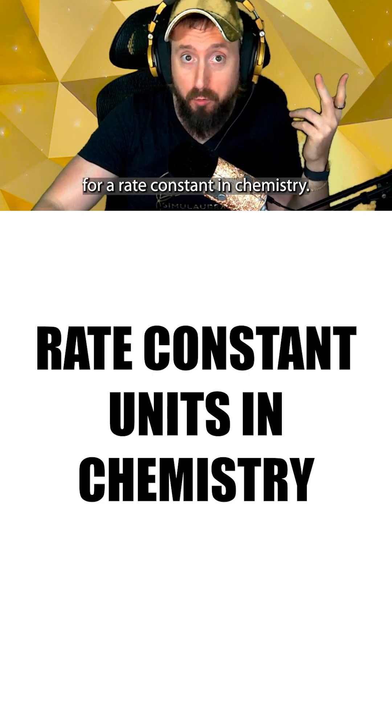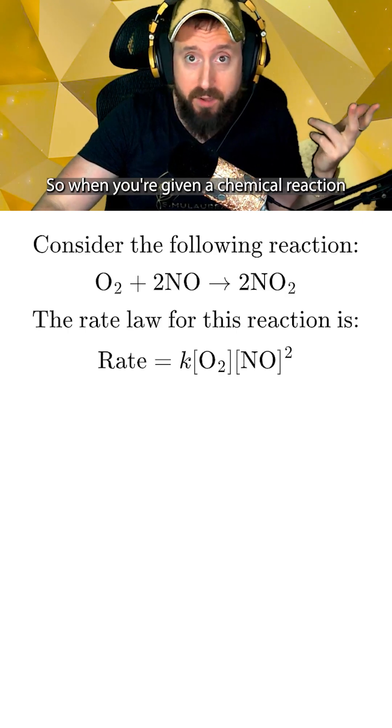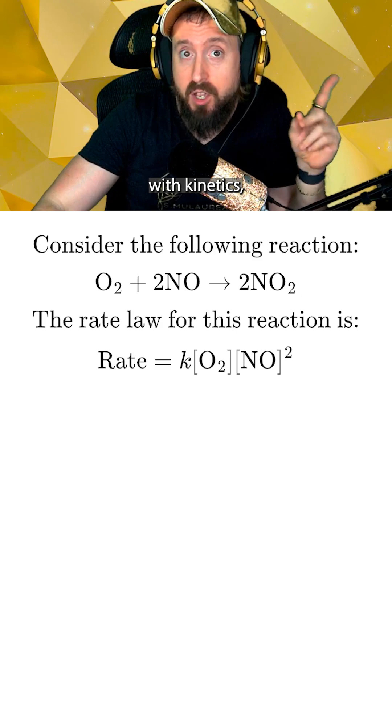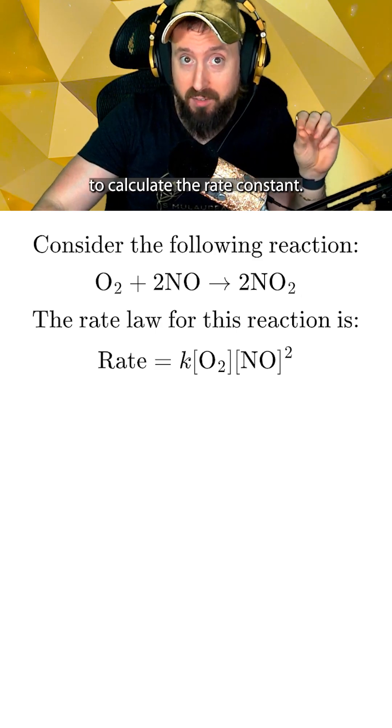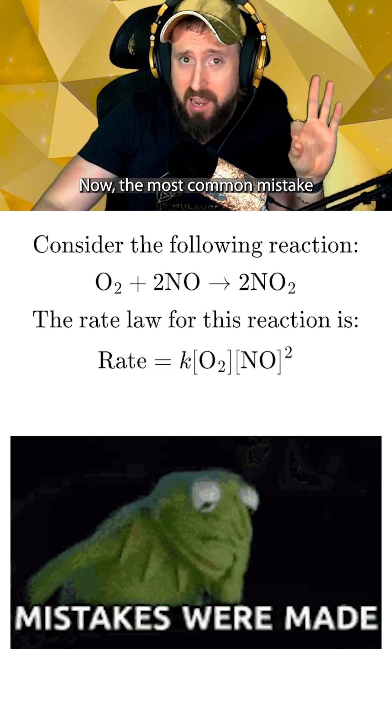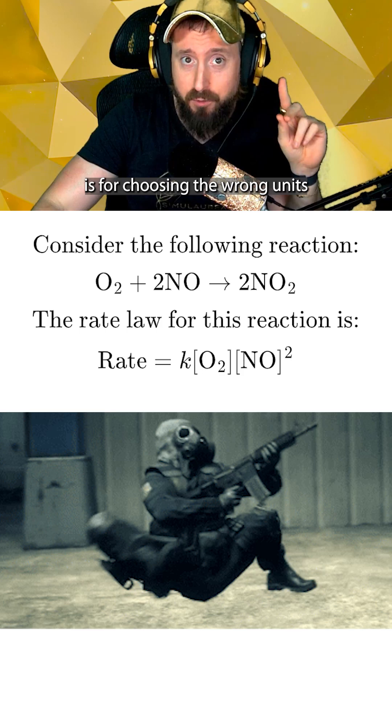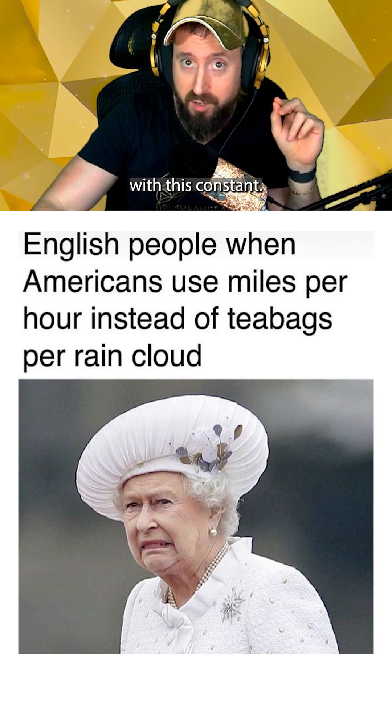Here's the quick way to determine units for a rate constant in chemistry. When you're given a chemical reaction with kinetics, you'll usually be asked to calculate the rate constant. The most common mistake the TAs will try to mark points off for is choosing the wrong units with this constant.